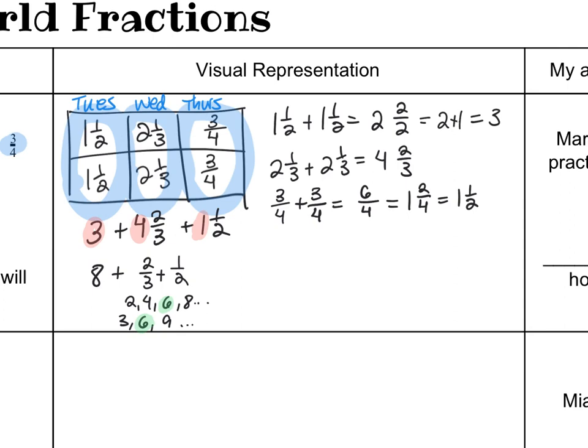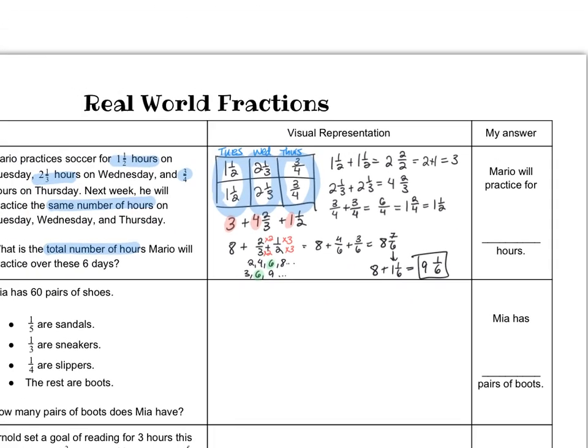Now that I know that, I can say three goes into six two times, and two goes into six three times. So I'll rewrite my whole expression, this time with a denominator of six in both of those fractions. Now I can add these together. That gives me eight and seven-sixths. But seven-sixths is an improper fraction. Let me turn the seven-sixths into a mixed number. That would be one and one-sixth. So what I really have here is eight plus one and one-sixth, which is nine and one-sixth. Mario will practice for nine and one-sixth hours on these six days.